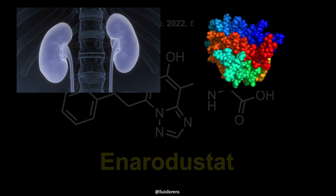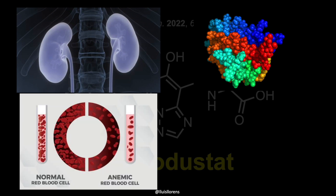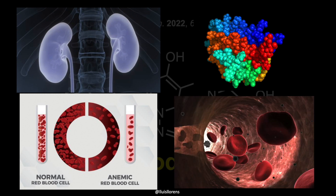Anemia is a condition in which you lack enough healthy red blood cells to carry adequate oxygen to your body's tissues. The primary cause of renal anemia is the depression of erythropoietin production in the kidney associated with the kidney disorder.